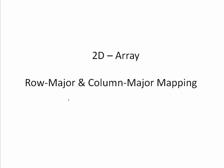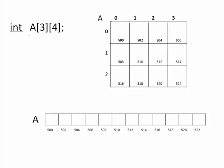For two-dimensional arrays, a compiler can follow either the row major method or the column major method — there are two types of mapping. Here I have declared an array of size 3×4. Although we draw it as a two-dimensional grid with indices on paper, in reality the array is created as a single dimension in memory because memory is linear with integer addresses. The addresses shown here start from 500, 502, 504, and so on.